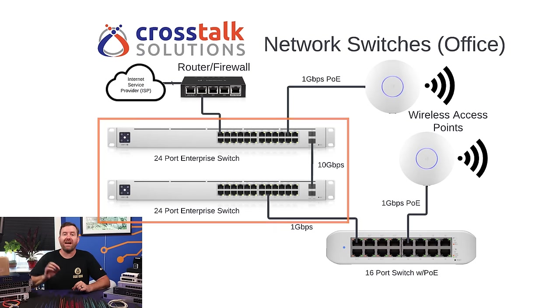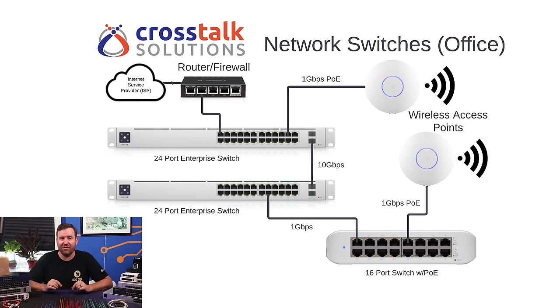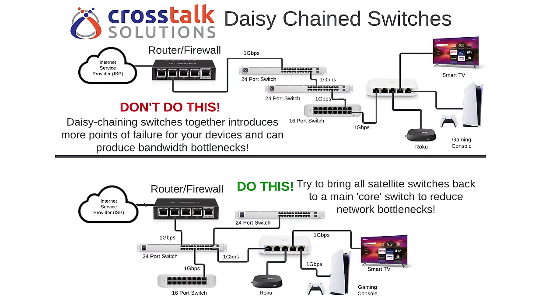Finally, let's take a look at a small business network example. Here we have some larger rack-mounted 24-port switches, two of them for redundancy, connected with a 10-gigabit fiber backbone. One thing to keep in mind when designing your network is that you should try to bring all of your switch connections back to the main or core switches if possible, and avoid daisy-chaining multiple switches together. It can still work if you do that, but with each additional daisy-chain switch, you're adding more points of failure between your devices and the router, and you're also possibly creating bottlenecks if too many switches and devices are terminating back to a single gigabit ethernet port.